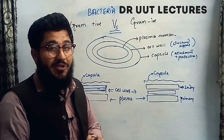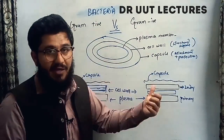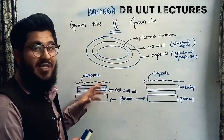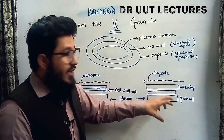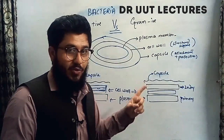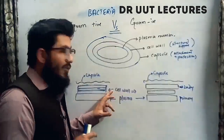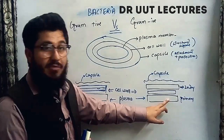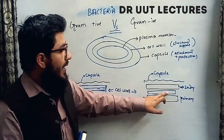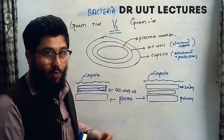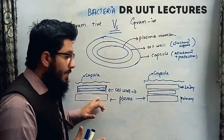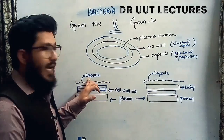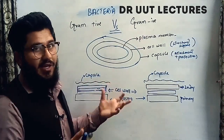The second very important differentiating point between gram-positive and gram-negative is the plasma membrane. In gram-negative bacteria, there is an additional — secondary — plasma membrane. So in gram-negative, we have: a primary plasma membrane, a thin cell wall, a secondary plasma membrane, and then the capsule. Whereas in gram-positive bacteria, we have: a plasma membrane, a thick cell wall, and a capsule. This is the real difference regarding gram-positive and gram-negative bacteria.